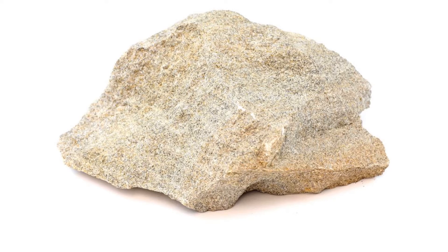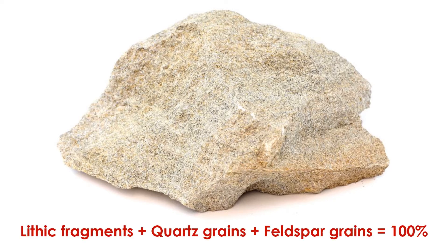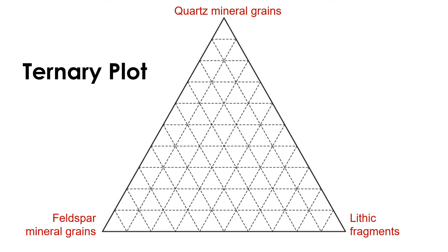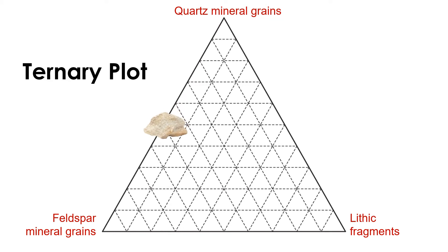If we study the grains in a sandstone, we will find that generally speaking the numbers of lithic fragments and quartz and feldspar mineral grains total to 100 percent. If all of the particles occur in equal amounts, we can graph the sandstone in the middle of the ternary plot. Conversely, if all of the particles are quartz mineral grains, we would put it at the top of the plot. And if there were equal amounts of quartz and feldspar grains but no lithic fragments, it would fall somewhere along the left side of the plot. A ternary plot like this allows you to visualize the variation that exists among different sandstones.